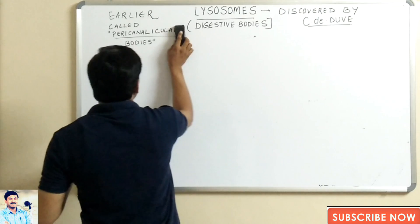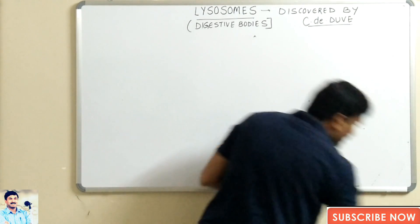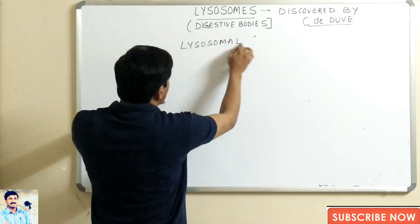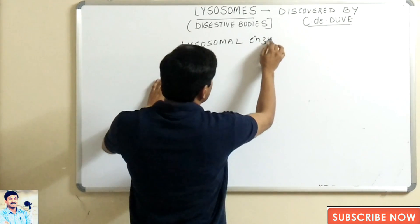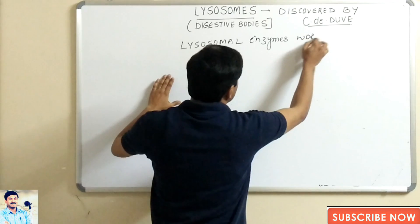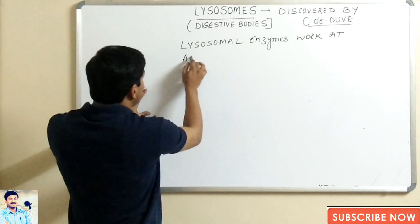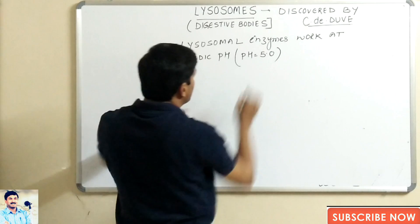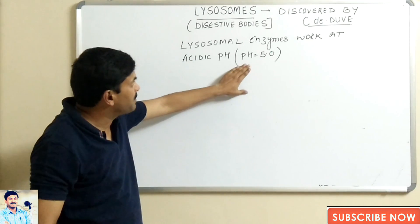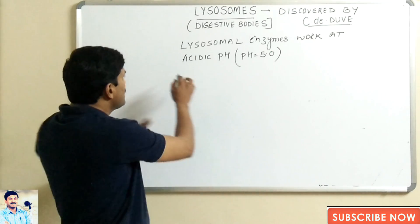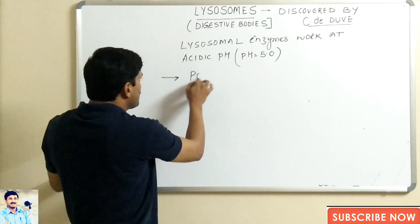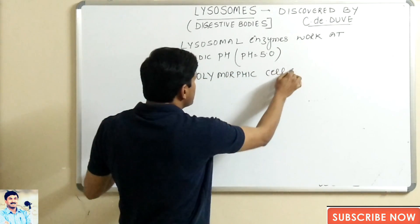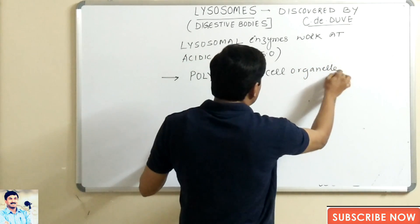These hydrolytic enzymes are chiefly concerned with digestion and can also be called digestive enzymes. The question arises: at what pH do these enzymes work? All lysosomal enzymes work at acidic pH — that is, pH below 7 — and specifically at a pH of 5.